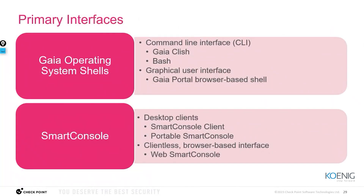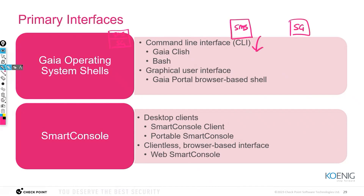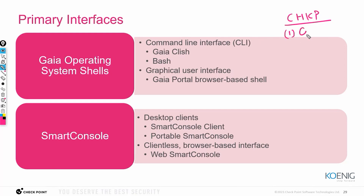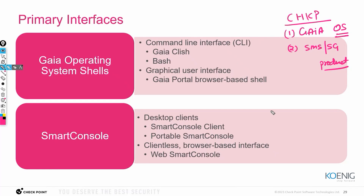Whenever you are deploying Checkpoint, you have a few steps to follow. First, you should install Gaia — that is the operating system. Then you can either make it a management server or a security gateway, which are basically the products. The management server product is installed on the Gaia OS.